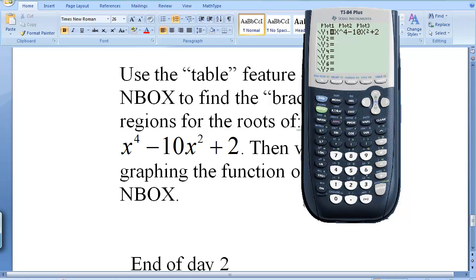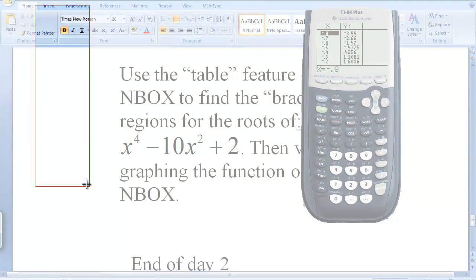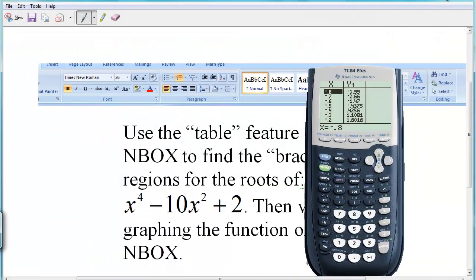It's asking you to use the table feature, so let's go ahead second table. Depending on how you set your table, if you look at my table setup you go second table set. My table starts at negative 0.8 and increments by 0.1, so that's the way I've chosen this table to be so that we get more precision. Now if I go take a look at the table, let me snip this out.